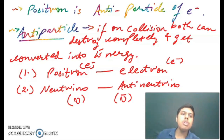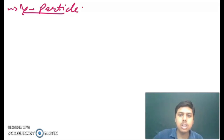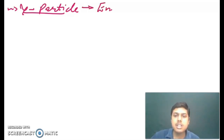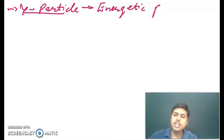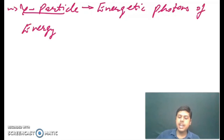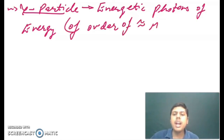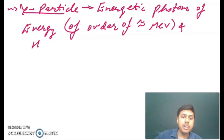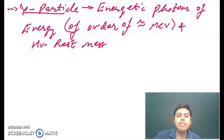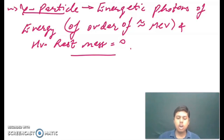Now let us see the gamma particle. Gamma particles are considered to be energetic photons of energy of the order of nearly mega electron volts. An important statement: gamma particles have a rest mass equal to zero. In the next video, we will continue with the displacement law or the radioactive law and also about alpha decay, beta decay and gamma decay.